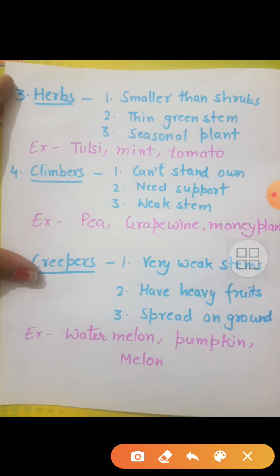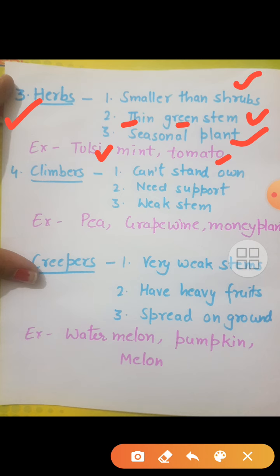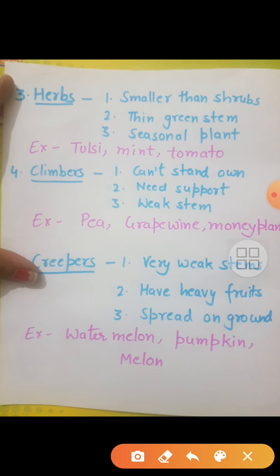Next, herbs — third number is herbs. Herbs kya hota hai? Smaller than shrubs — ye shrubs se bhi chhote hote hai. They have a thin green stem. And they are seasonal plants — wo seasonal hote hai, season mein aate hai. For example: pudina garmi mein aata hai, tulsi sardi mein aati hai, aur tomato dono seasons mein milti hai. So herbs: smaller than shrubs, thin green stem, seasonal plant. Examples: tulsi, mint, and tomato.